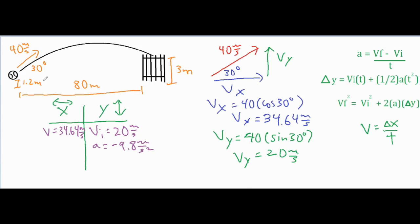The object is struck 0.2 meters off the ground. If it's struck 0.2 meters off the ground and has to clear a 3 meter fence, then its delta Y has to be 2.8. From 0.2 to 3, if you subtract those two, it has a delta Y of 2.8 meters.